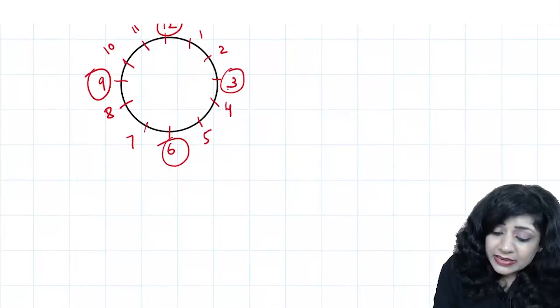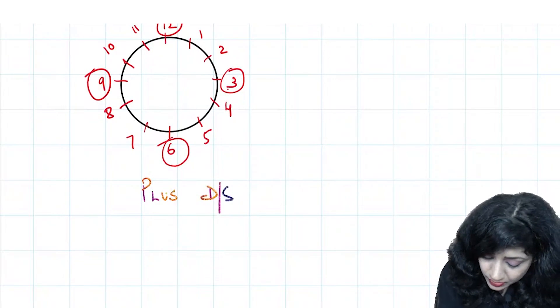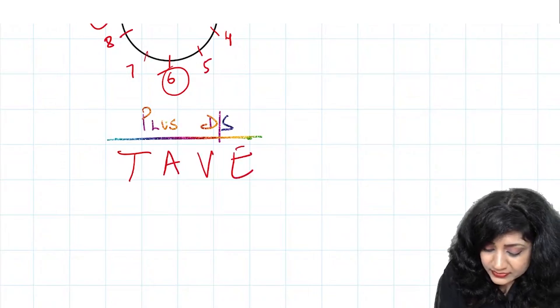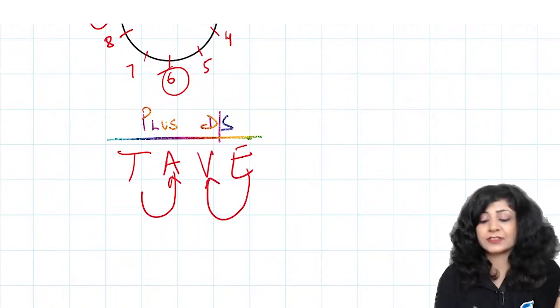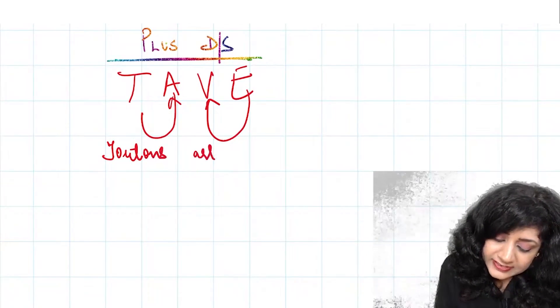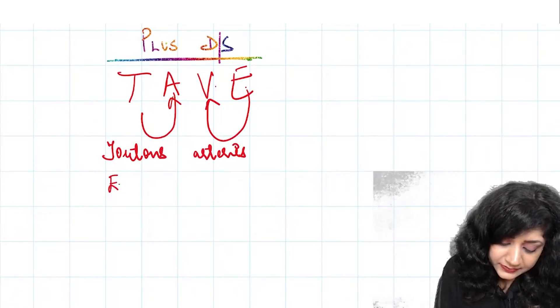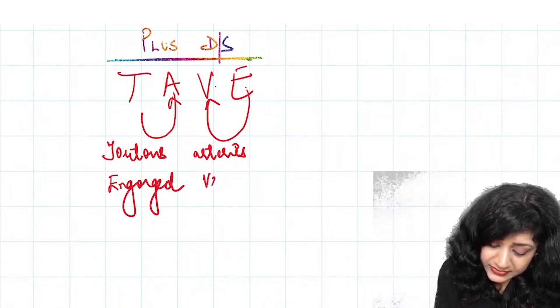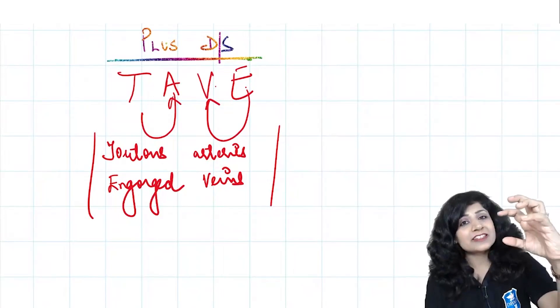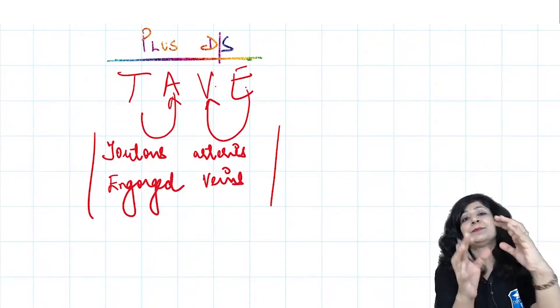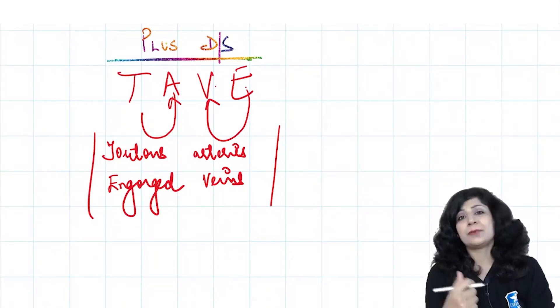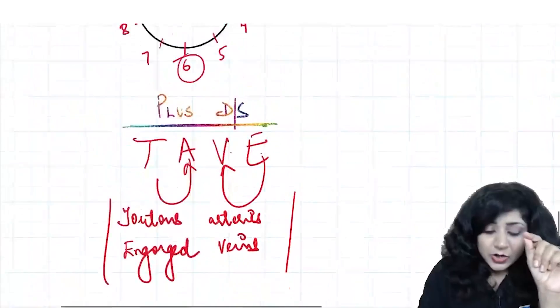There's one more thing called plus disease. The mnemonic is tortuous arteries, engorged veins - TAVE. If you have tortuous arteries and engorged veins along with this, it's a very severe disease. I'll combine the most severe stages with the most severe zones, along with the most extent clock hours and plus disease. That's your threshold and pre-threshold which I will have to treat.